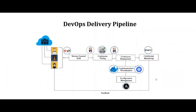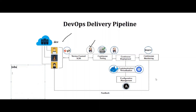Now let's move to the DevOps delivery pipeline. Developers write code and place it in a version control system — a system that records changes to a file over time. We need a system that can detect that developers have made changes, pull the code, and build it. The tool for this is Jenkins, the continuous integration tool. This is done with the help of jobs. Jobs in Jenkins are nothing but a set of tasks. Jenkins works like a manager or the heart of the delivery pipeline.